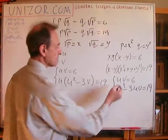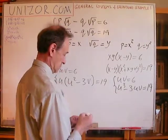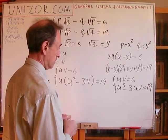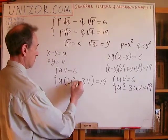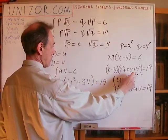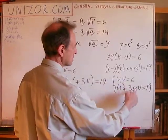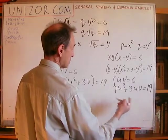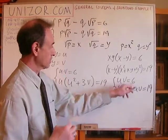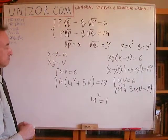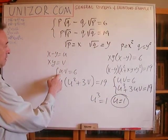Is this easier? Of course. From UV equals 6, substitute into U cubed minus 3UV equals 19: that gives U cubed minus 3 times 6 equals 19, so U cubed minus 18 equals 19 — wait, it should be plus 3UV. Since UV equals 6, we get U cubed equals 19 minus 18, which is 1. So U cubed equals 1, from which U equals 1, and therefore V equals 6.